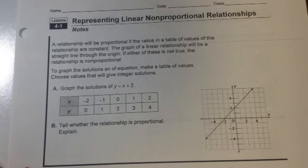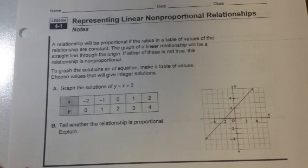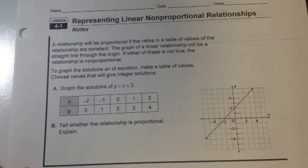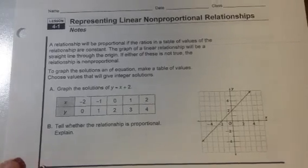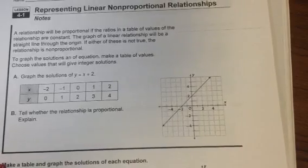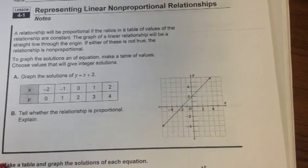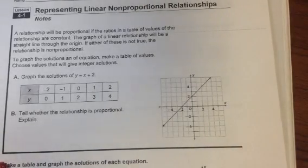We've talked about that already. In order for it to be proportional, it has to be linear and it has to go through the origin. They gave me a table and they've already done the work over here. This is just an example for you to look at for notes purposes. The one thing I want to talk about is the slope.